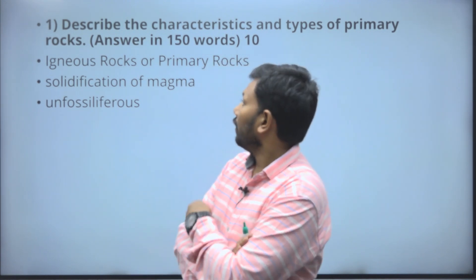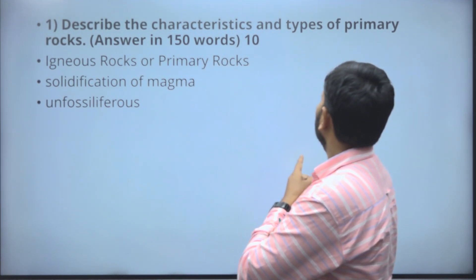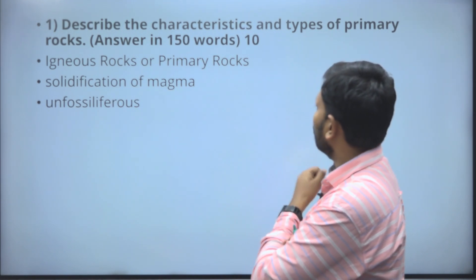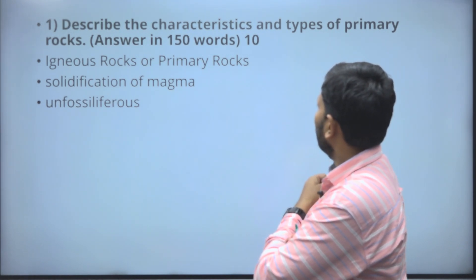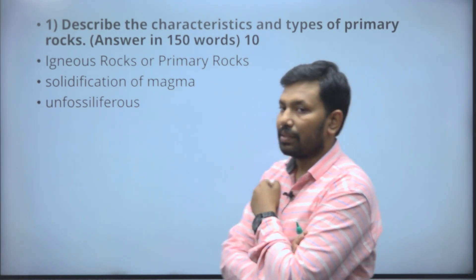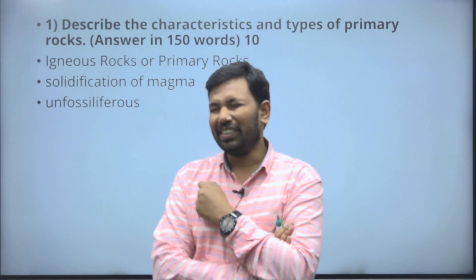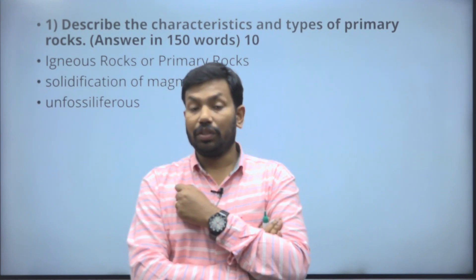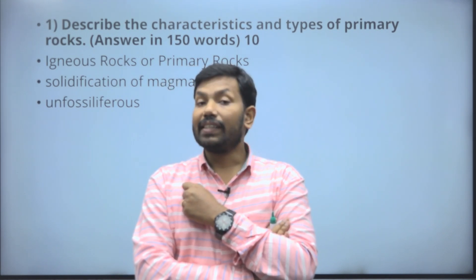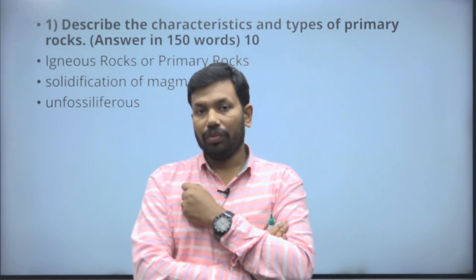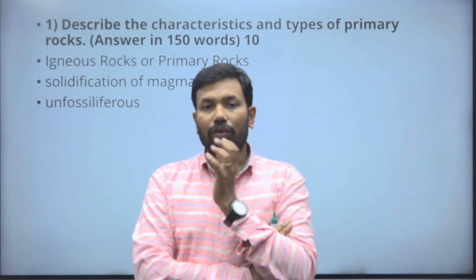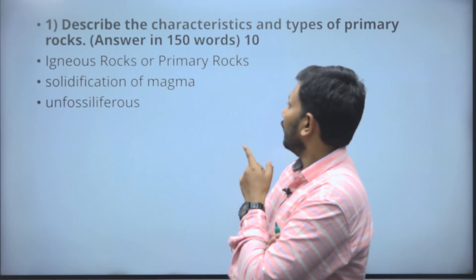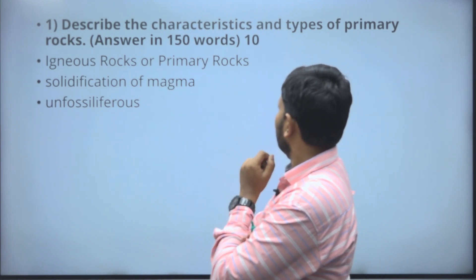Starting from the first question: describe the characteristics and types of primary rocks. It is a 150-word question where you get a maximum of 10 marks. In general, if you write with diagrams, you will get almost 6 marks — that is 60 percent of the marks, which is a very good score. So we will go into this question; he is asking about characteristics and types of primary rocks.